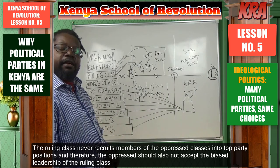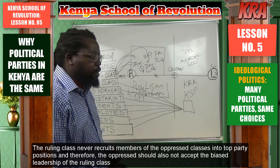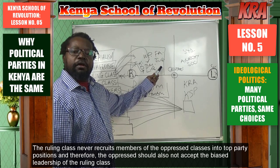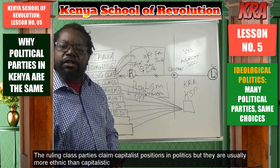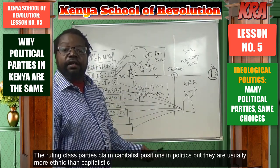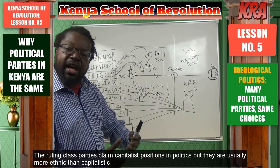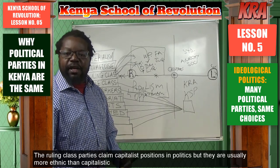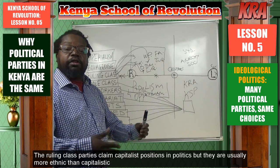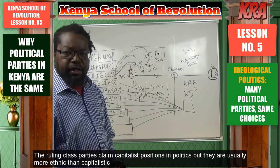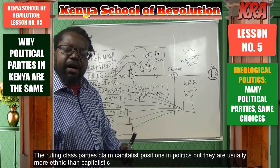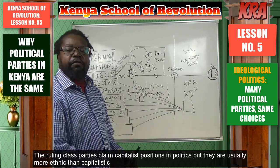The left-wing parties are never led by the bourgeois — they are never led by the ruling class. They are mainly led by the lower classes, and the agenda is normally to put workers to power. When you look at Kenya, parties are basically the same because the majority of them are on the right wing of the political divide. And within this right wing, they are not even practicing right-wing ideas. They are more ethnic than capitalist — that is why we don't even talk about pure capitalism in Kenya; we talk about ethnic politics.